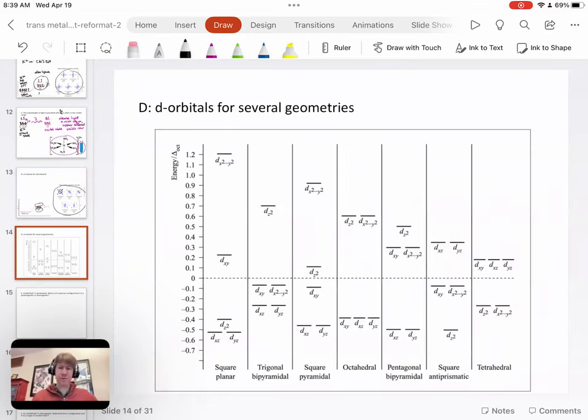Here's the d orbitals for several geometries, including octahedral, which we've already talked about, tetrahedral, which we've talked about as well, square planar with its one very high d orbital in energy. And the other one we have to worry about is not on here. It's linear. And maybe that's the one that we will talk about at some point.